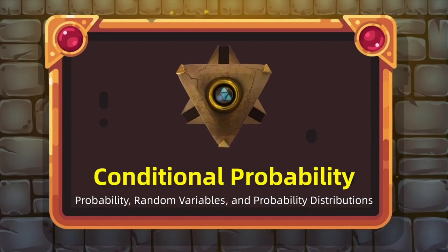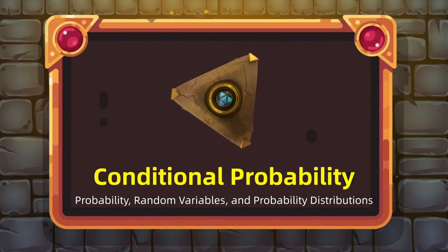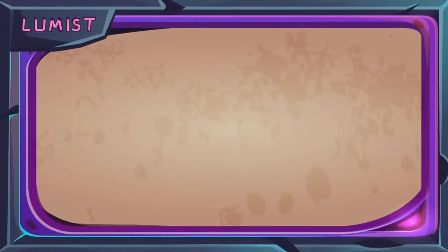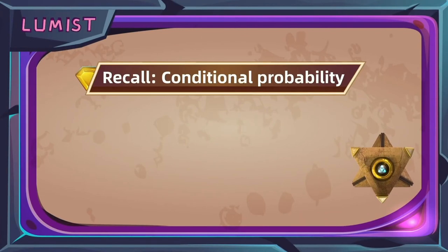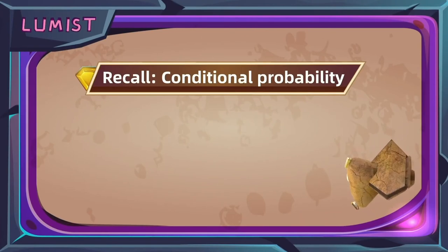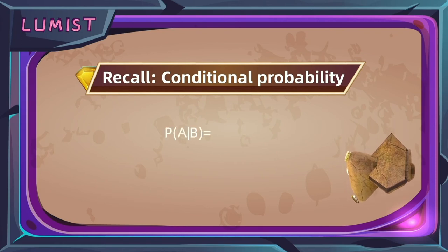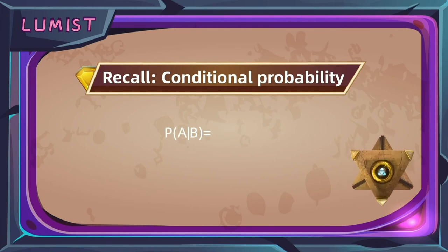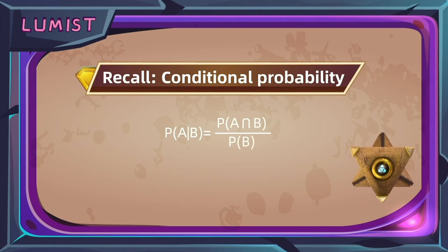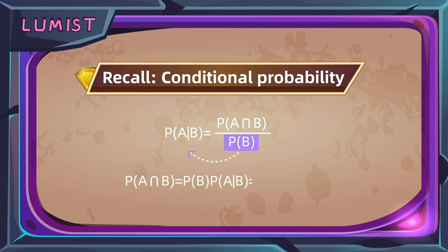Today's lesson is about Bayes' rule, which is a type of staple exam question related to the concept of conditional probability. To understand Bayes' rule, let's first review conditional probability. If we have two events A and B, the probability of event A given event B is calculated as the probability of A intersect B divided by the probability of B. We can also write the probability of A intersect B as P(B) times P(A given B), or equivalently as P(A) times P(B given A).